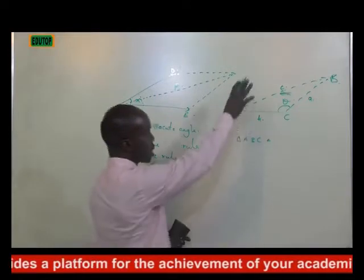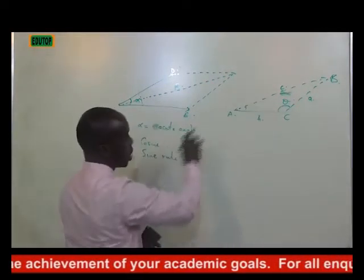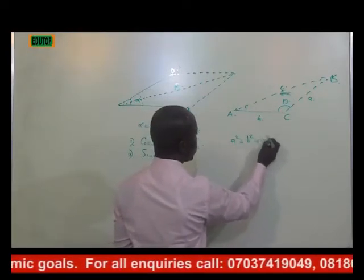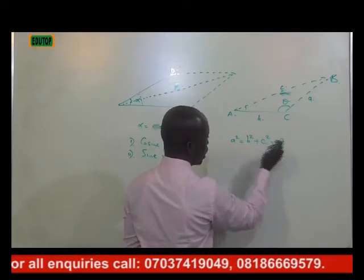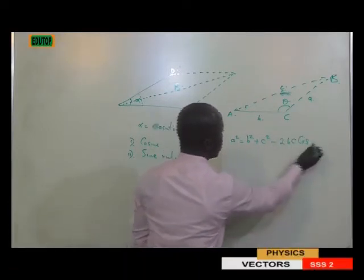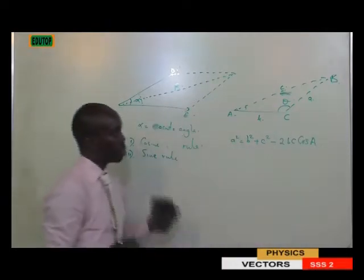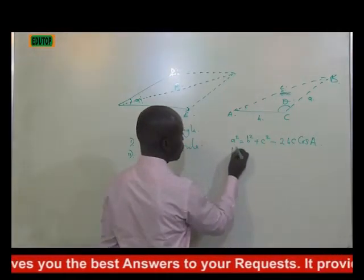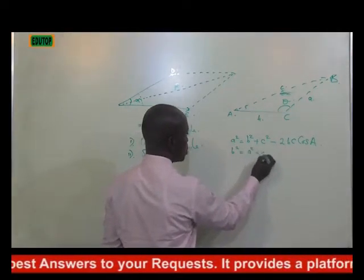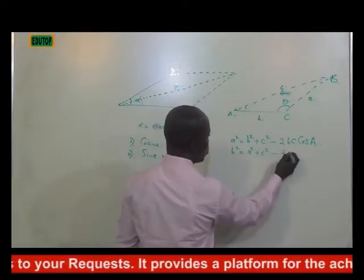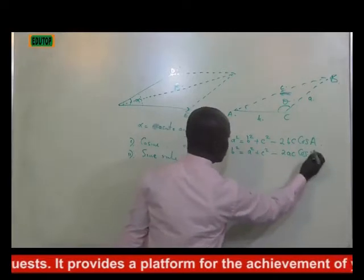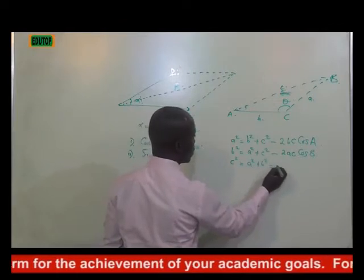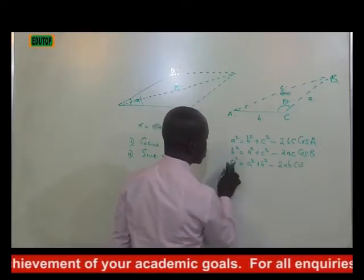For you to obtain all the possible cosine rule for this particular triangle, what do you do? You say A squared equals B squared plus C squared minus 2BC cos A. The second possibility is B squared equals A squared plus C squared minus 2AC cos B. The third one is C squared equals A squared plus B squared minus 2AB cos C.